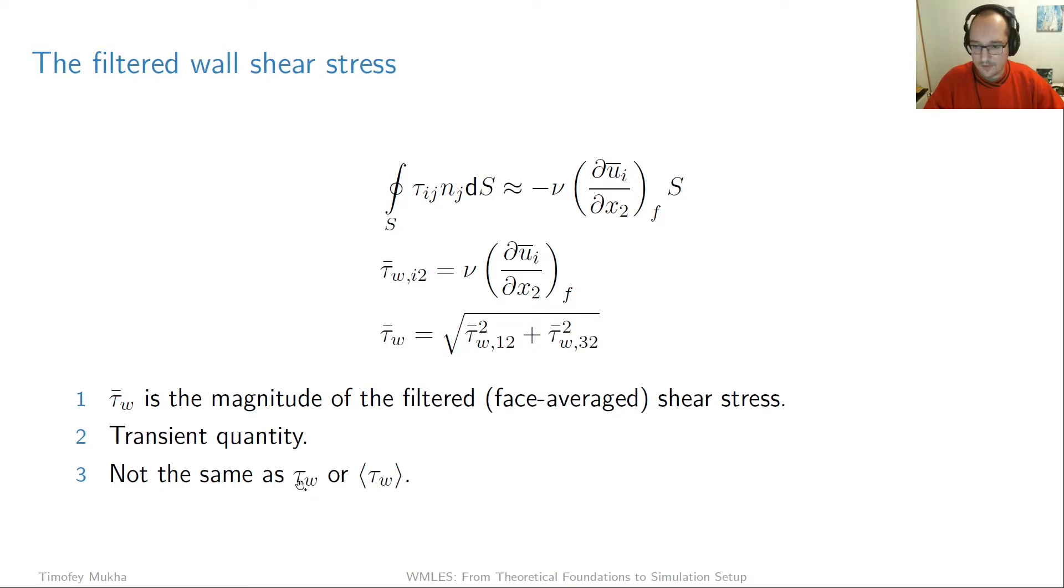Okay now on the other hand this filtered tau wall will approximate the average of the unfiltered tau wall across the whole face. Okay so filtered tau wall is an average of unfiltered tau wall across the face so they're not the same. And finally also it goes without saying that the average wall shear stress is also not the same as the filtered one because this of course is not a transient quantity. Rather this is just a time average of this instantaneous wall shear stress at f taken over a reasonable period of time.